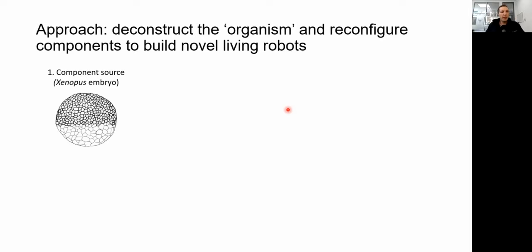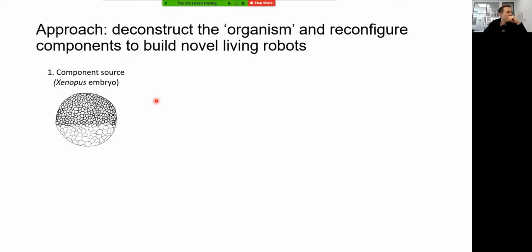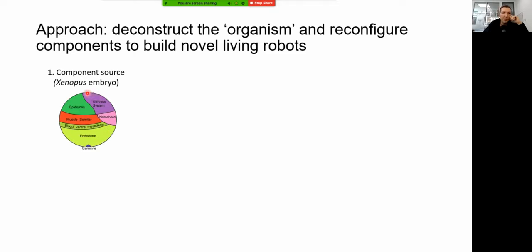My approach was to simply use an organism — the early embryo of an amphibian — deconstruct it, and then reconfigure the components to build a novel living robot. For everything I'll show you today, my source is the developing embryo of the frog Xenopus laevis, an aquatic frog that lays eggs externally. About 24 hours after fertilization, you get a ball of stem cells. Even at this early stage we have an atlas that tells us the fate of cells from different regions: the cells on top become epidermis or the central nervous system, while those on the bottom become endoderm or the organs.